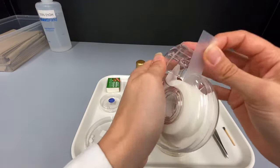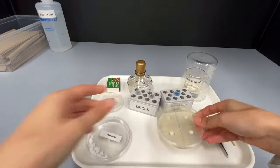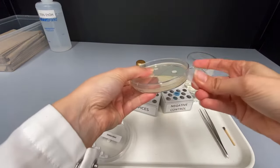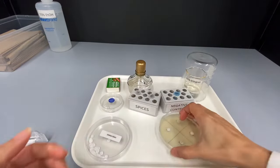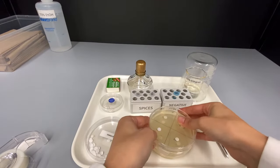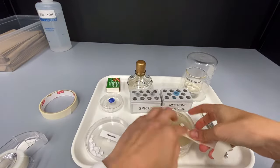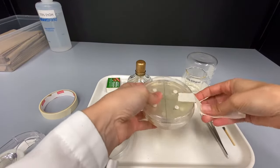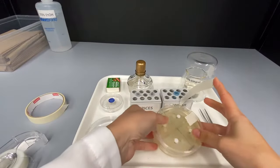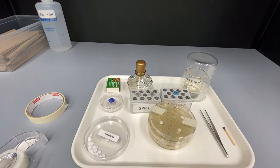You can now use a small piece of tape on each side of the plate to ensure the lid is secure. Combine all of the plates from your group and secure them together with more tape. The sealed plates will now be placed in the 37 degree incubator overnight to allow the bacteria to grow.